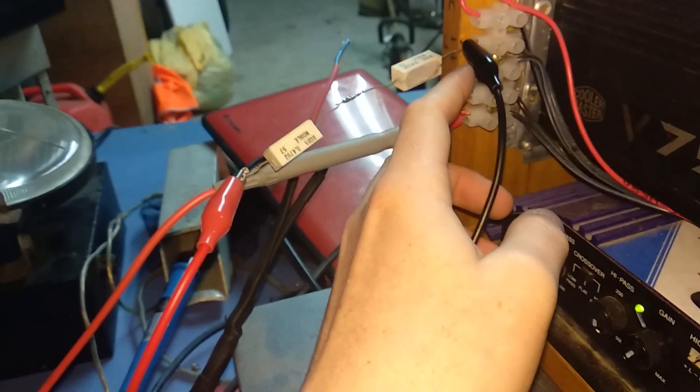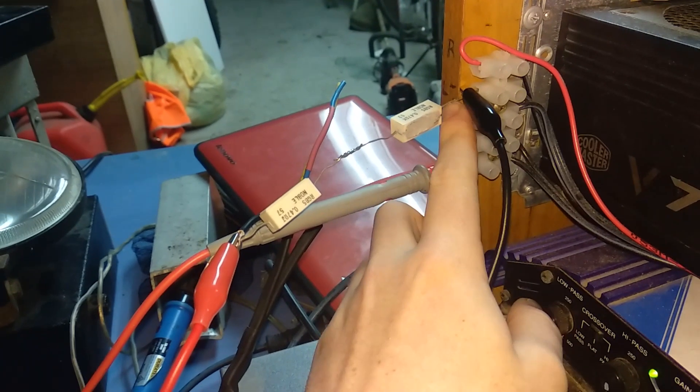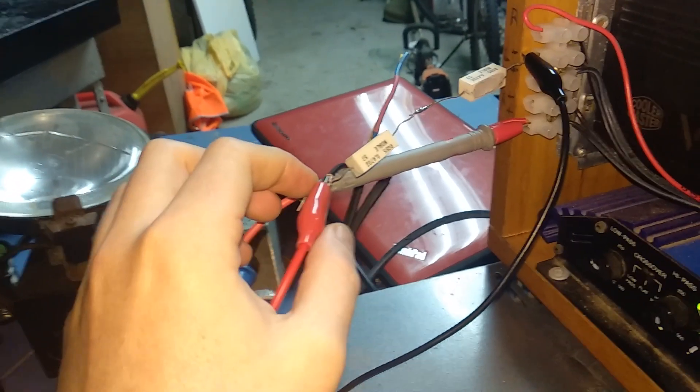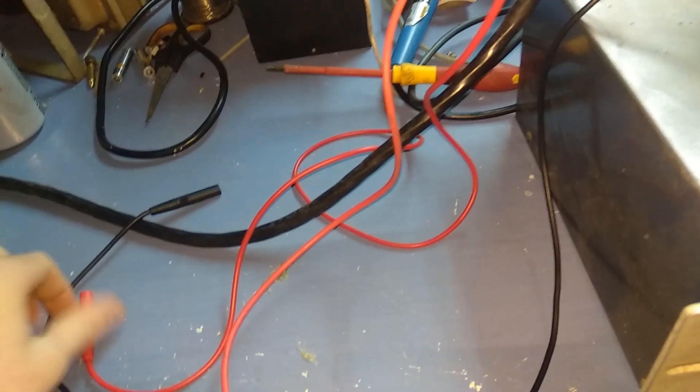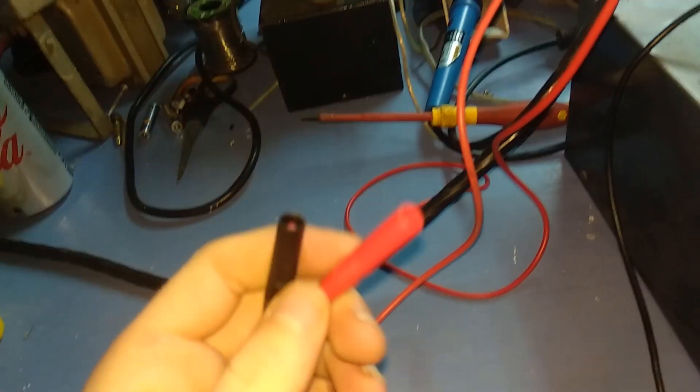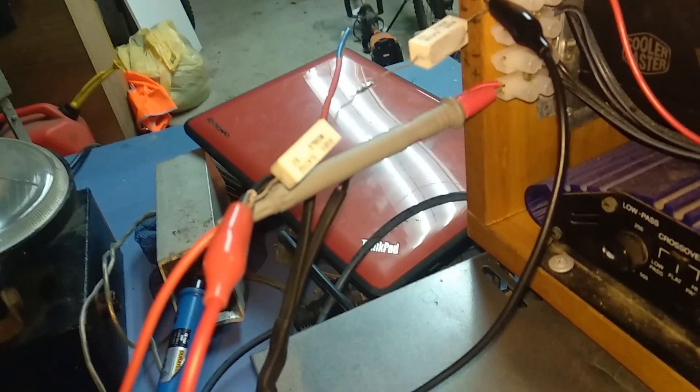So you can see right here I've got the black lead on the negative and then I've got the two resistors in series and then I've got the first red lead. Now if I measure the voltage across these two points I'll be able to work out the current going through the speaker.